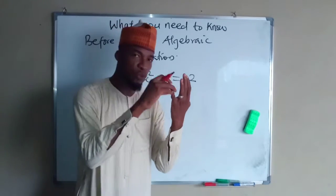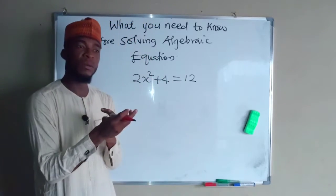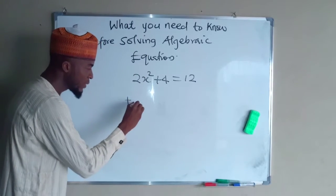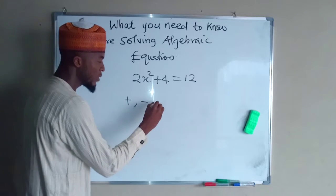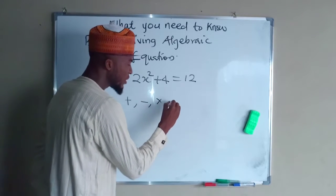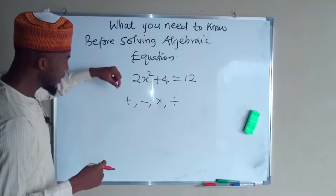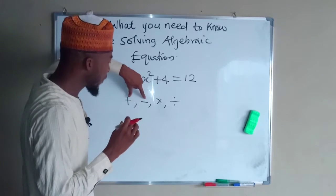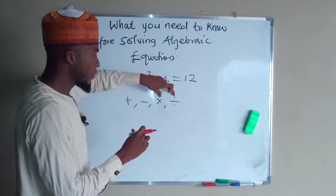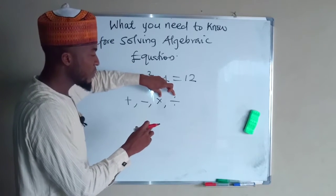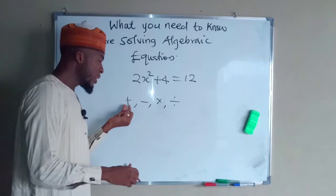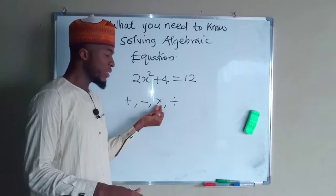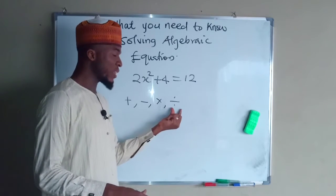Apart from the four basic operations, you need to know roots and exponents, which are opposite of one another. The four operations are addition, subtraction, multiplication, and division. Addition and subtraction are opposite of each other; multiplication and division are also opposite to one another. Therefore, the inverse of positive is negative and vice versa; the inverse of multiplication is division and vice versa.